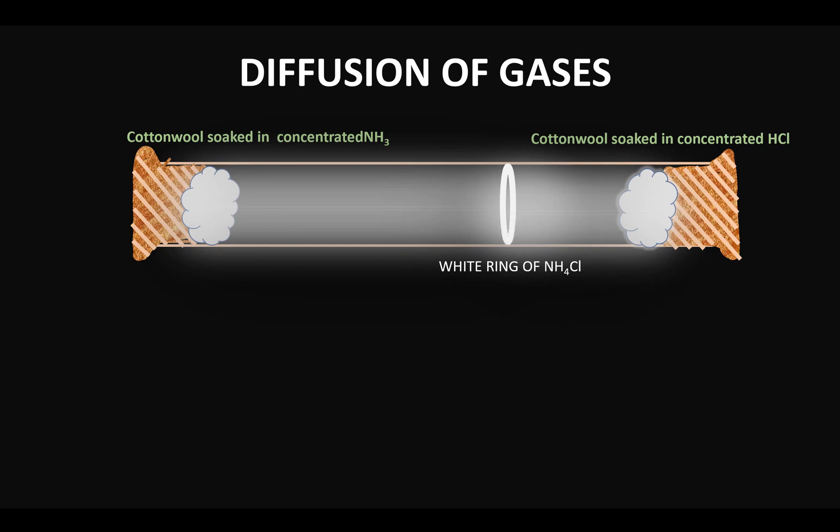So now the question is: what are the two things that are seen to diffuse from the cotton wools? Well, from the cotton wool that is soaked in concentrated ammonia, there is the ammonia gas that is being diffused, and from the cotton wool soaked in concentrated hydrochloric acid, there is the hydrogen chloride gas that is seen to diffuse.